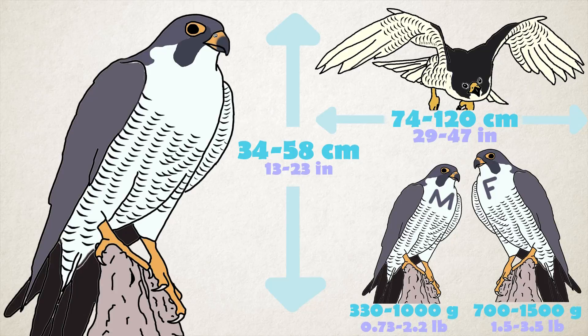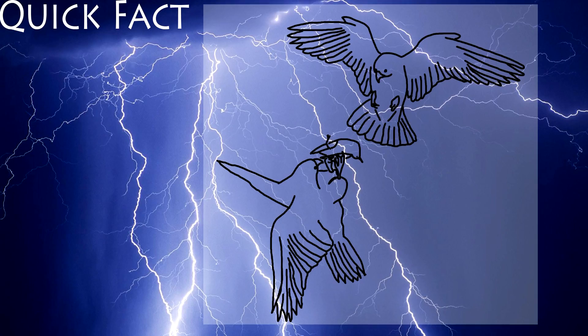Their head, back, wings, and 13 to 19 centimeter tail are bluish-black to grey.